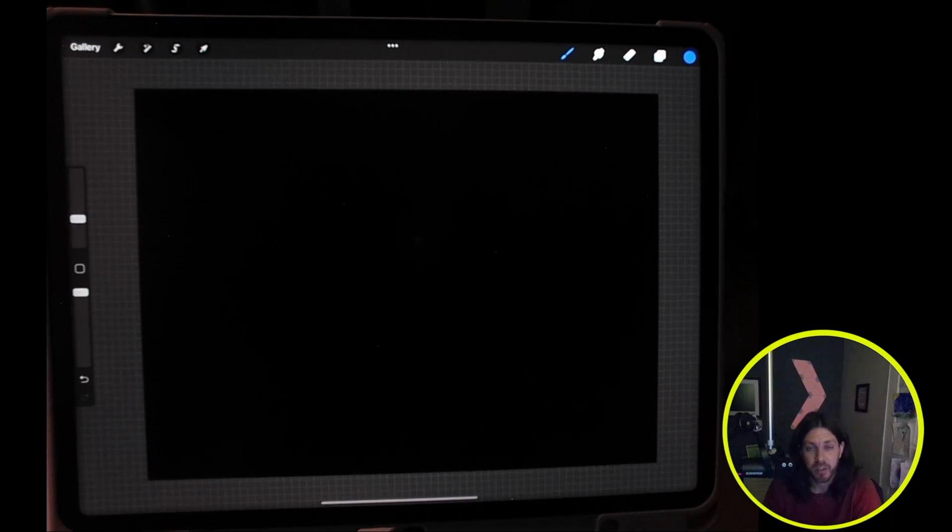Welcome friends to this video. We're going to be drawing a one-point perspective grid with perfect squares. What I have here is Procreate, so let's go ahead and get started. We're going to have a few steps.